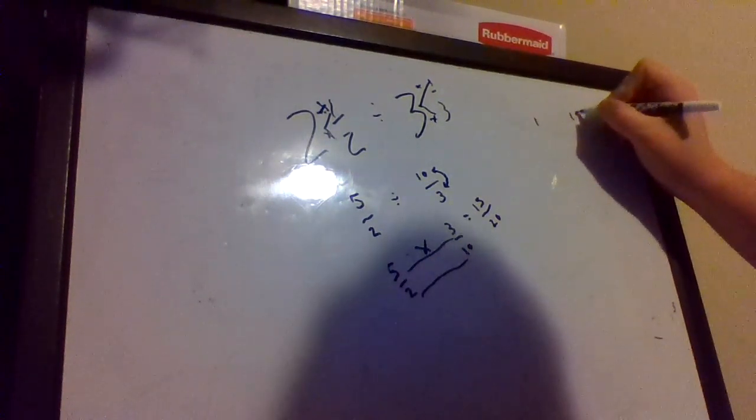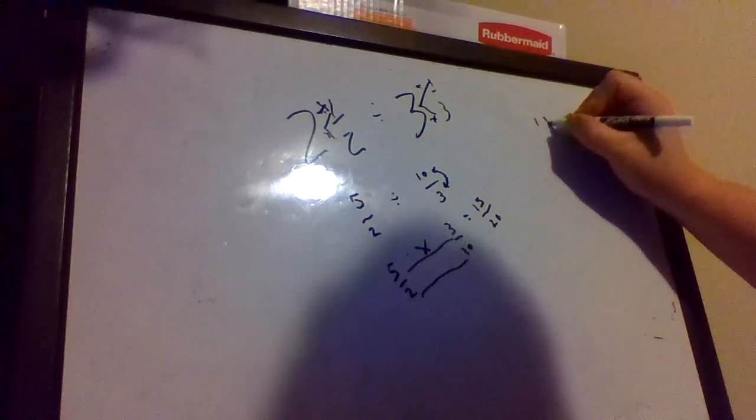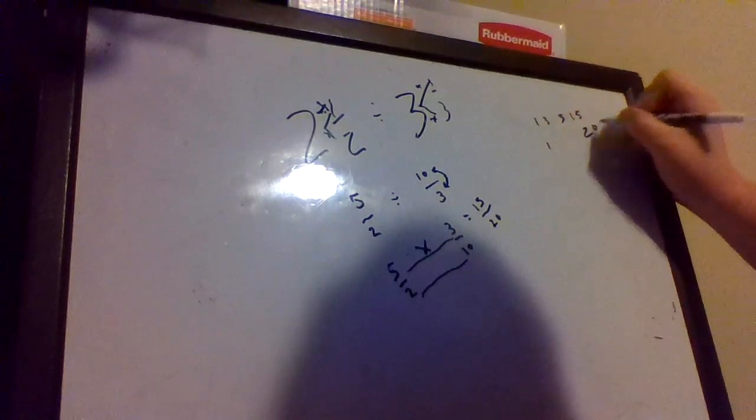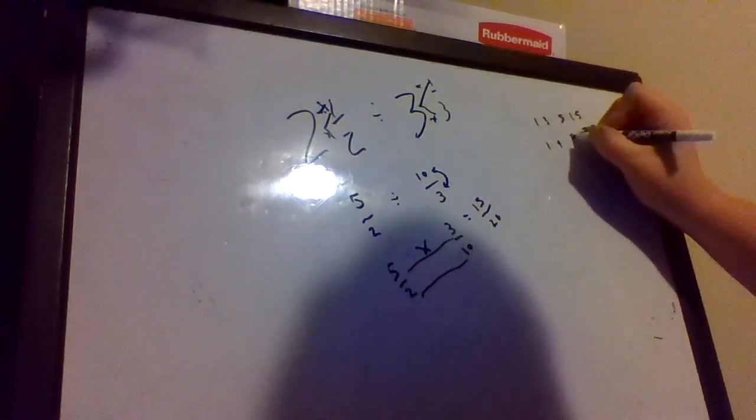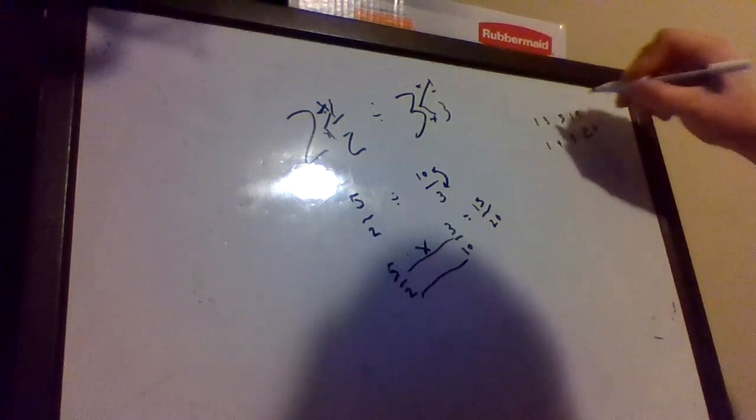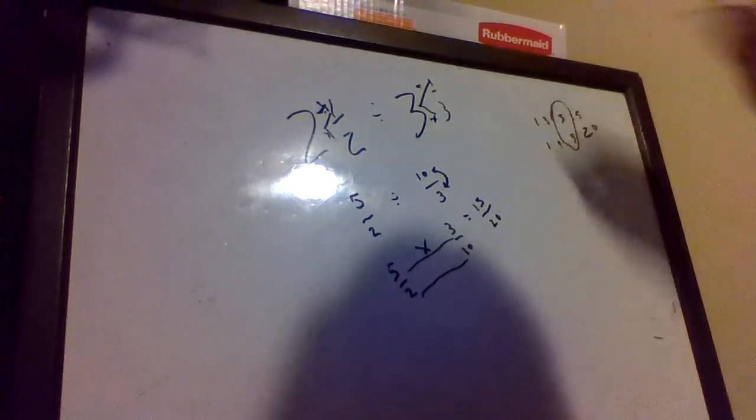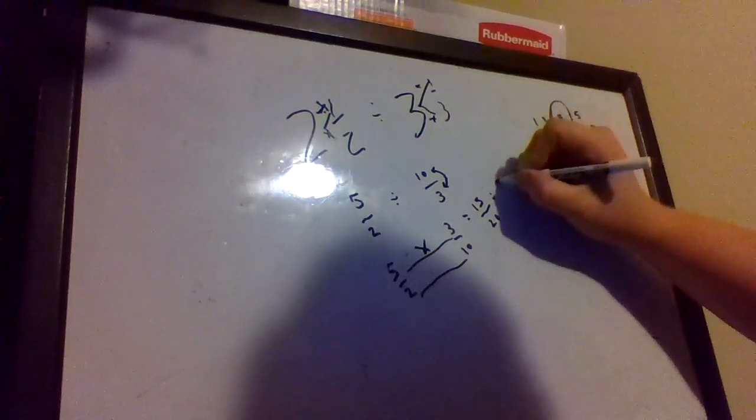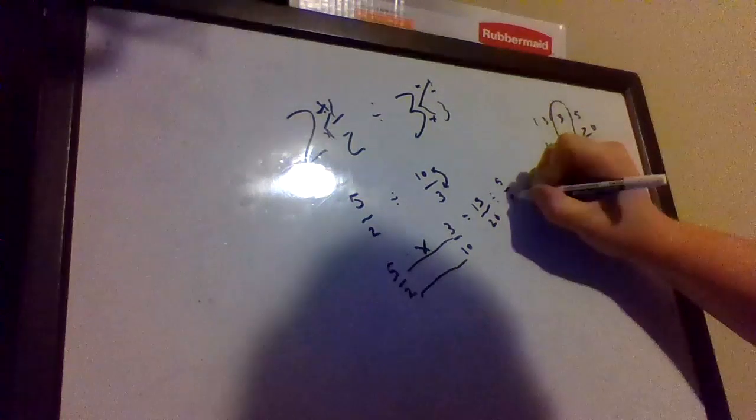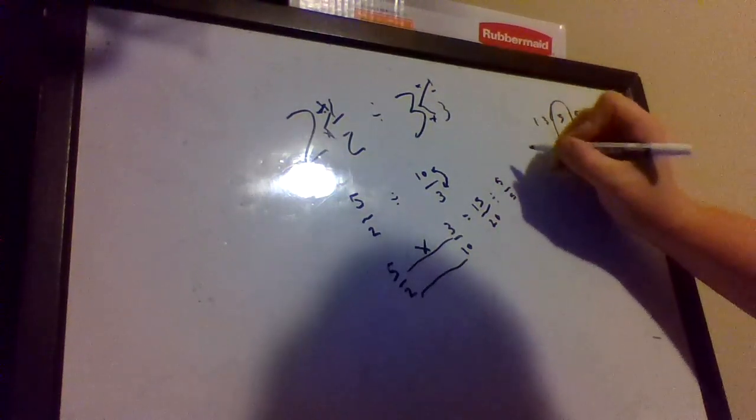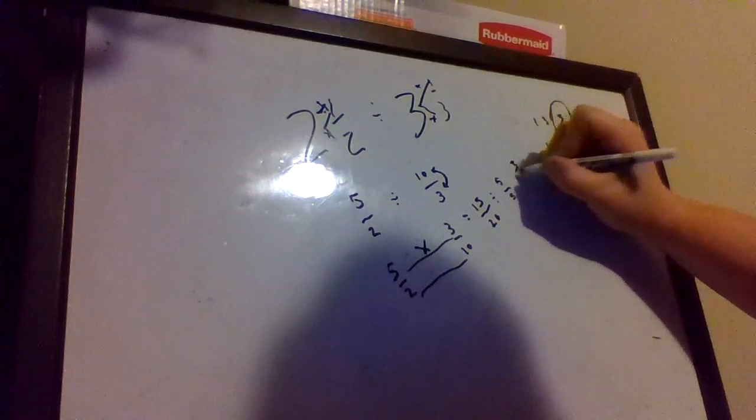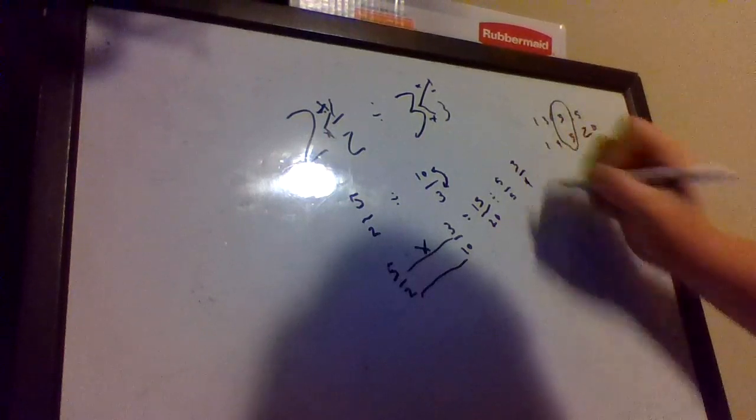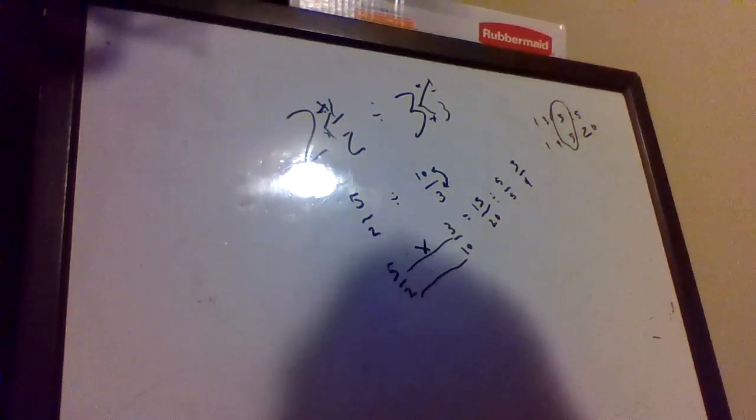And as a reminder, to find the greatest common factor, we just list the factors. Just to refresh your memory, the greatest common factor is 5, so that's what we're going to divide by. So we're going to divide the top by 5 and the bottom by 5. So 15 divided by 5 is 3, and 20 divided by 5 is 4. So we've worked this all the way through.